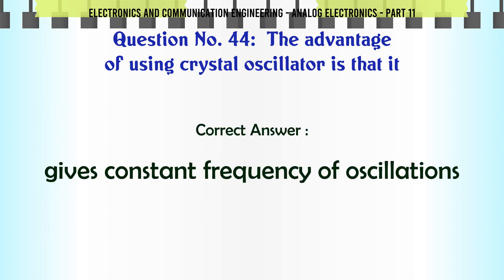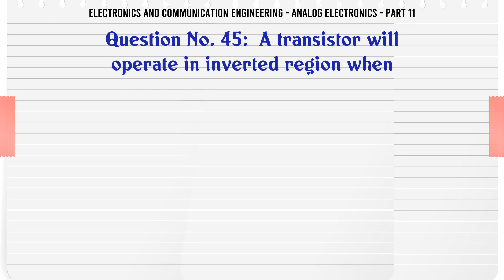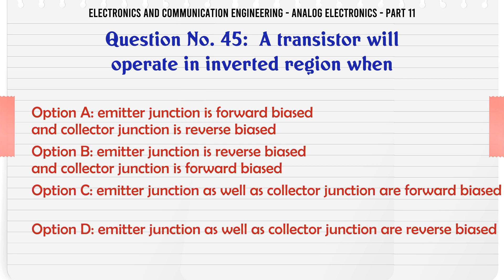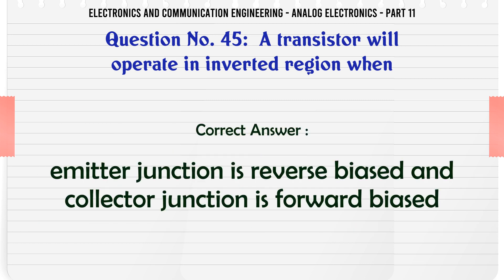A transistor will operate in inverted region when. A. Emitter junction is forward biased and collector junction is reverse biased. B. Emitter junction is reverse biased and collector junction is forward biased. C. Emitter junction as well as collector junction are forward biased. D. Emitter junction as well as collector junction are reverse biased. The correct answer is: Emitter junction is reverse biased and collector junction is forward biased.